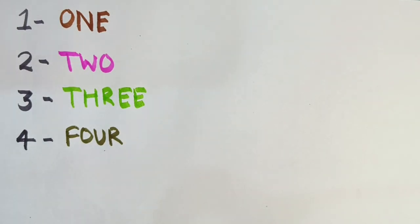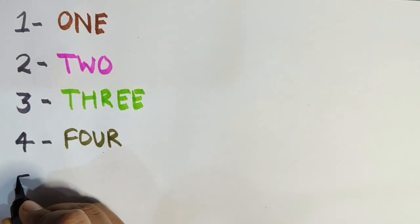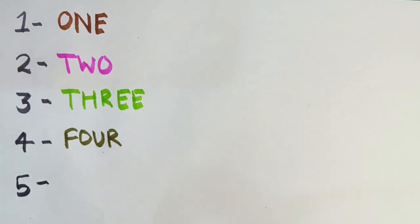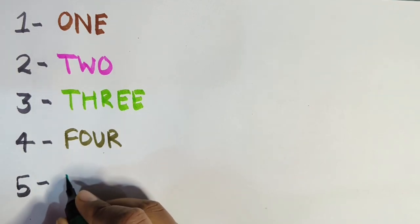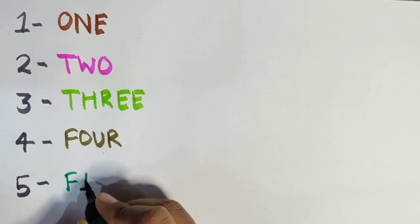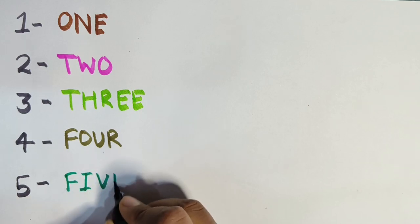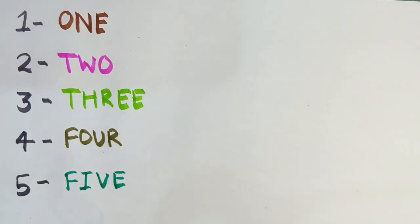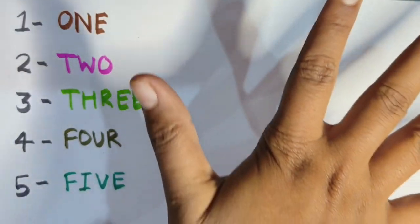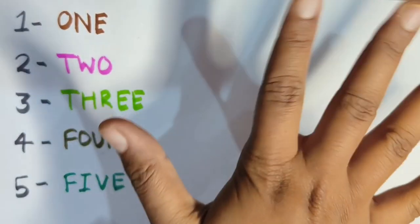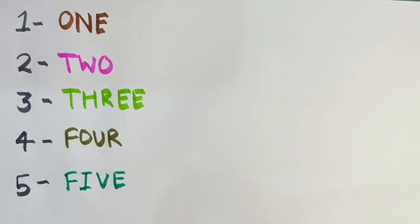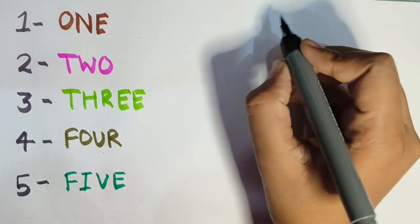Next is five. Do you know what is the spelling of five? Tell me the spelling of five. So the spelling of five is F-I-V-E. Five. F-I-V-E. Five. And these are my five fingers. How many fingers? Five fingers. Okay, let's do the next one — that is six.